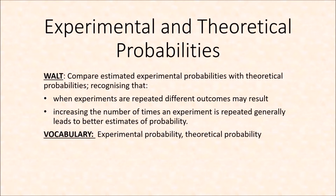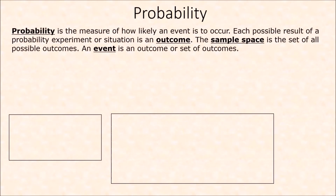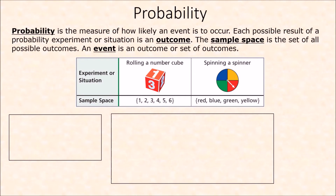The more times you do an experiment, the better your probability result. We will be using the words experimental probability and theoretical probability. As we all know, probability is the measure of likelihood — how likely is something to occur. Each possible result of an experiment is called an outcome, and the sample space is the set of all possible outcomes of an event or experiment.